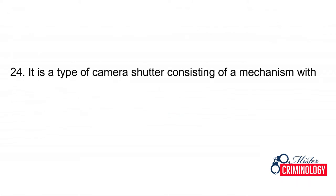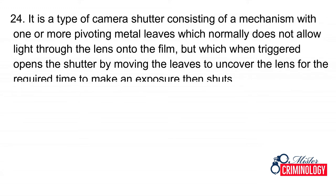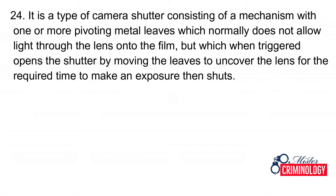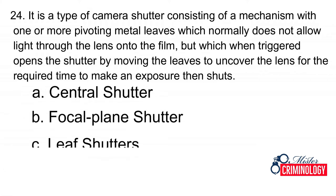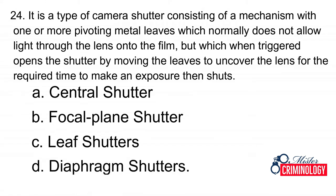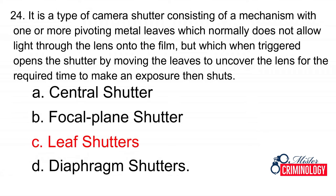Question 24: It is a type of camera shutter consisting of a mechanism with one or more pivoting metal leaves which normally does not allow light through the lens onto the film, but when triggered opens by moving the leaves to uncover the lens for the required time, then shuts. A. Central shutter, B. Focal plane shutters, C. Leaf shutters, D. Diaphragm shutters. Answer: C. Leaf shutters.